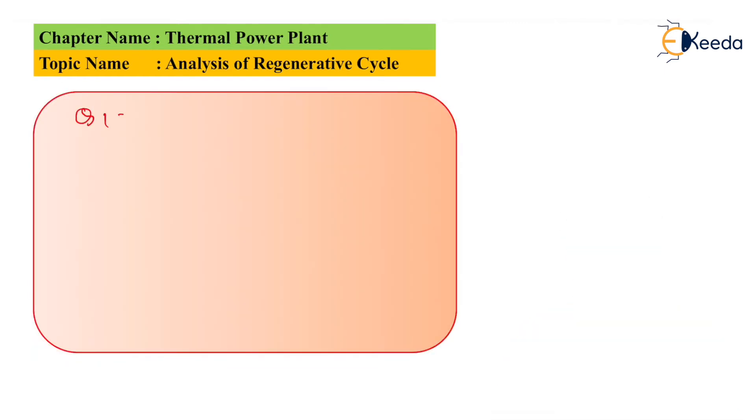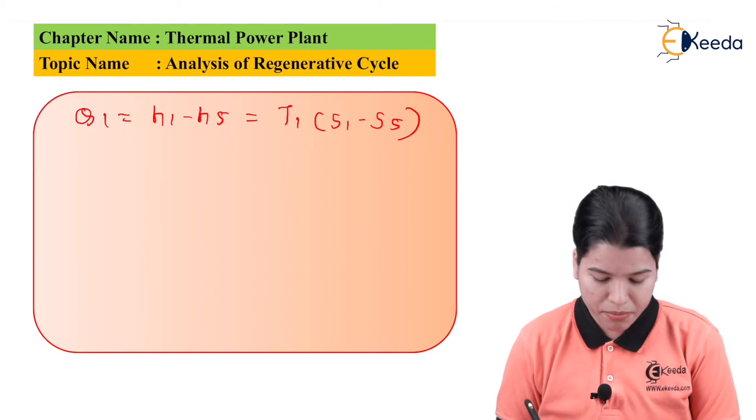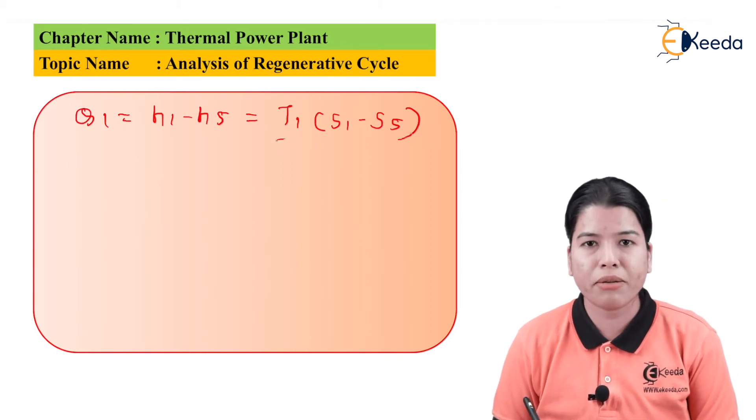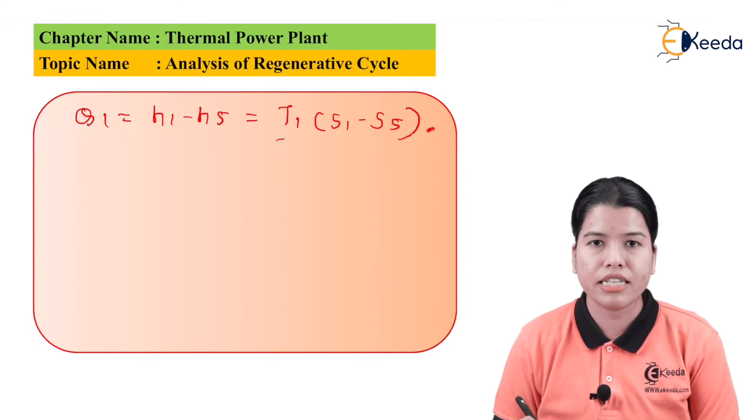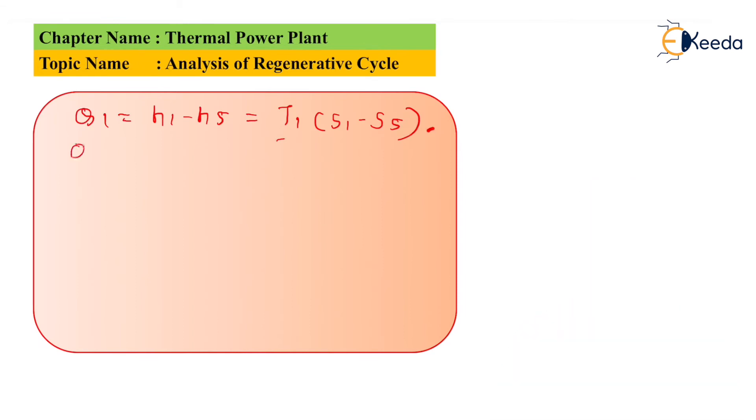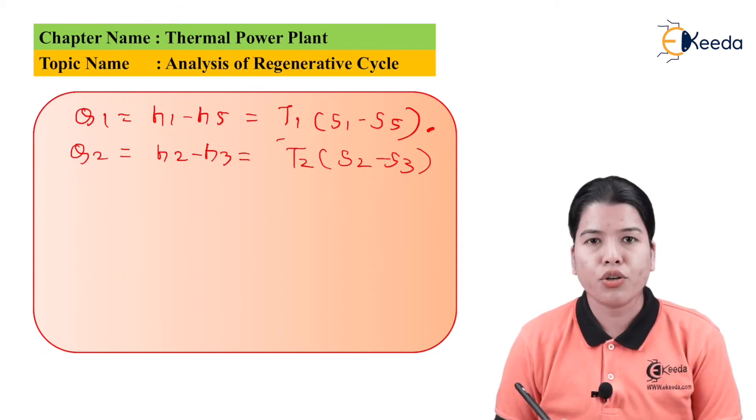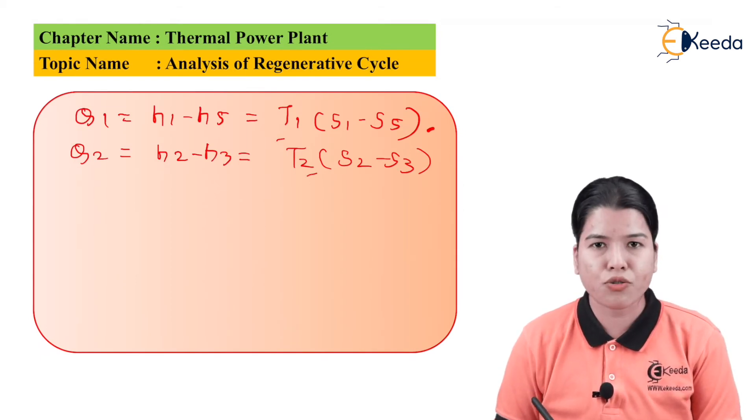Then, we can write Q1 equals H1 minus H5 equals T1 times (S1 minus S5). Similarly, Q2 equals H2 minus H3 equals T2 times (S2 minus S3).